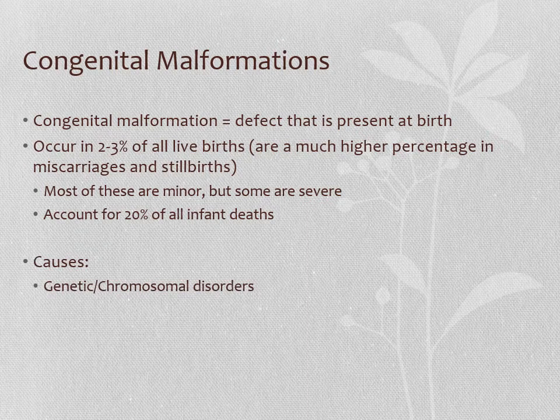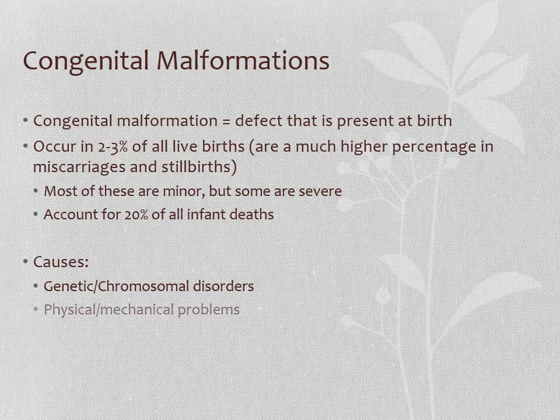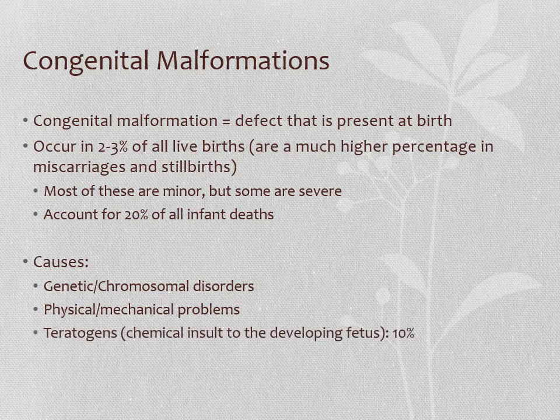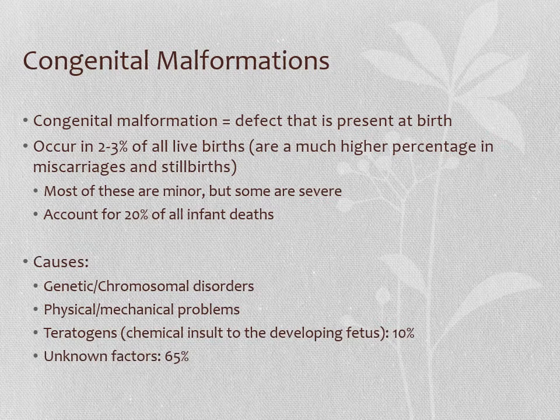There are different causes of congenital malformations. The first is genetic problems or chromosomal disorders, which account for a sizable majority. There can also be physical and mechanical problems that occur inside the uterus, or exposure to a teratogen — a chemical compound that isn't dangerous to the mother but can be harmful to the developing fetus. Alcohol is one example. Finally, more than half of cases have unknown causes.